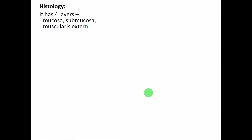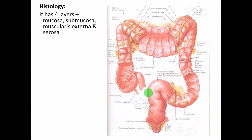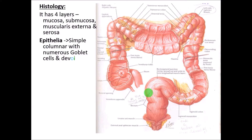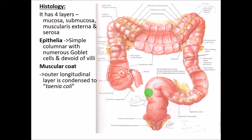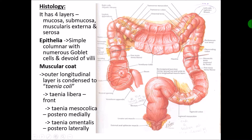Histological features: the cecum has all four layers present in most of the intestine — mucosa, submucosa, muscularis externa, and serosa. The epithelial lining is simple columnar epithelium with numerous goblet cells because it is large intestine, and it is devoid of villi. Coming to the muscular coat, the outer longitudinal layer is condensed into three areas called taenia coli, representing on all three sides.